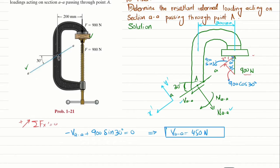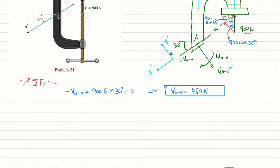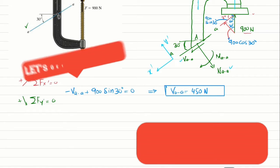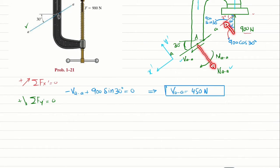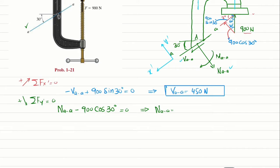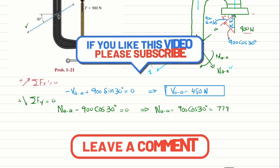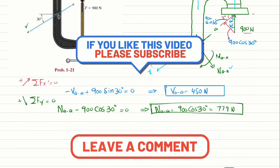Now we will find N_AA using the equation of equilibrium: the sum of all forces along the Y-dash direction must be equal to zero, with force in this direction taken as positive. N_AA is in the positive direction, and the component 900 cos 30° is in the negative direction. So: N_AA minus 900 cos 30° equals zero, giving us N_AA.